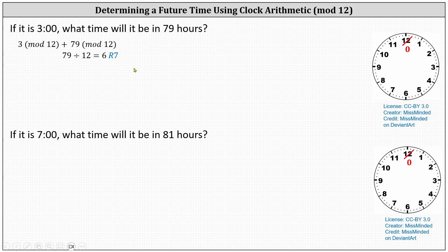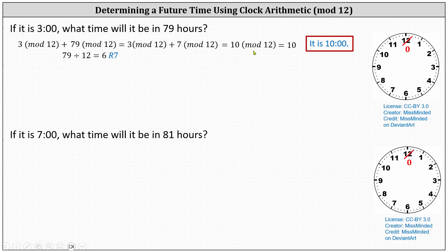Therefore we can write the sum as three mod 12 plus seven mod 12. Now we sum three and seven, which gives us 10 mod 12. And again, since 10 is less than 12, 10 mod 12 equals 10, indicating it's 10 o'clock.